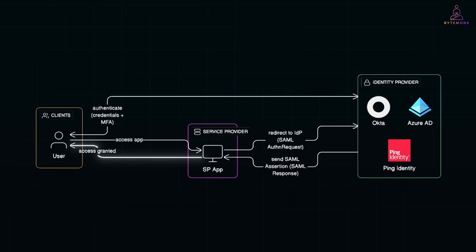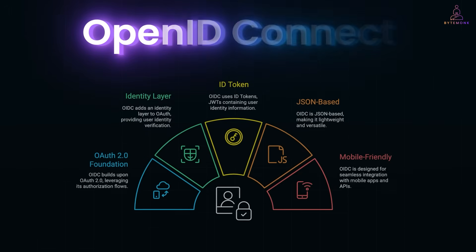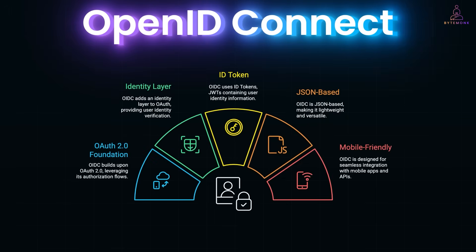SAML is XML-based — verbose, but very flexible. It's still the workhorse for web-based enterprise SSO. But it's not optimized for mobile apps or modern APIs, which is where OpenID Connect comes in.